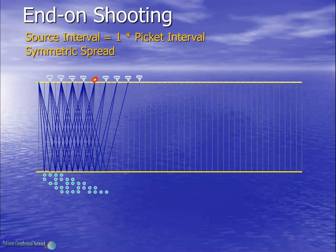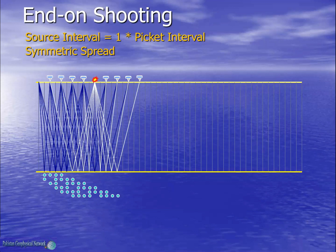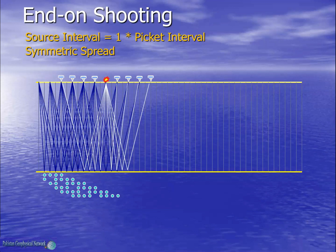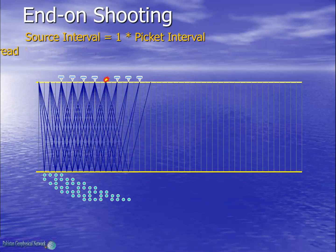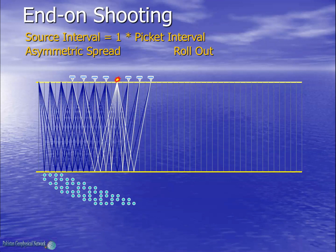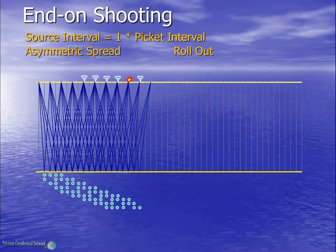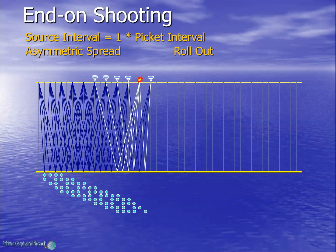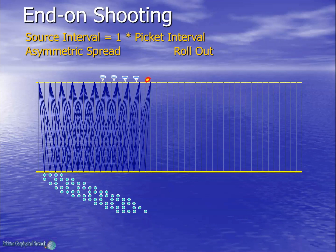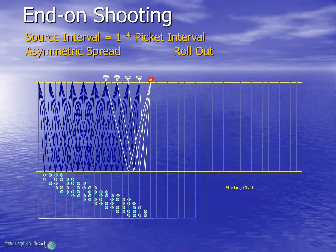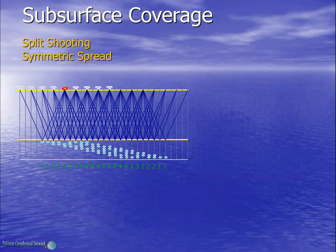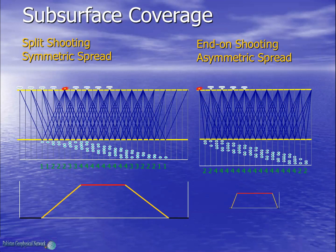Now the spread moves forward in symmetric form. Finally at the end of the line, the spread again becomes asymmetric as we start removing geophones from the front side — this is called rollout. In this case again the maximum fold is 4. Now let's consider the split and end-on shooting spreads in terms of fold coverage.